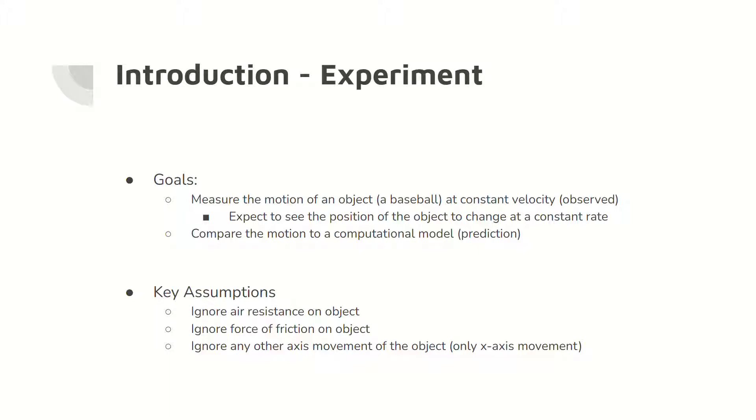The goals of this experiment are to observe the motion of a baseball at constant velocity and to compare this motion to a computer model of constant velocity. Key assumptions include ignoring the force due to air resistance and the force due to friction, while also ignoring any position changes in other axes other than the x direction.